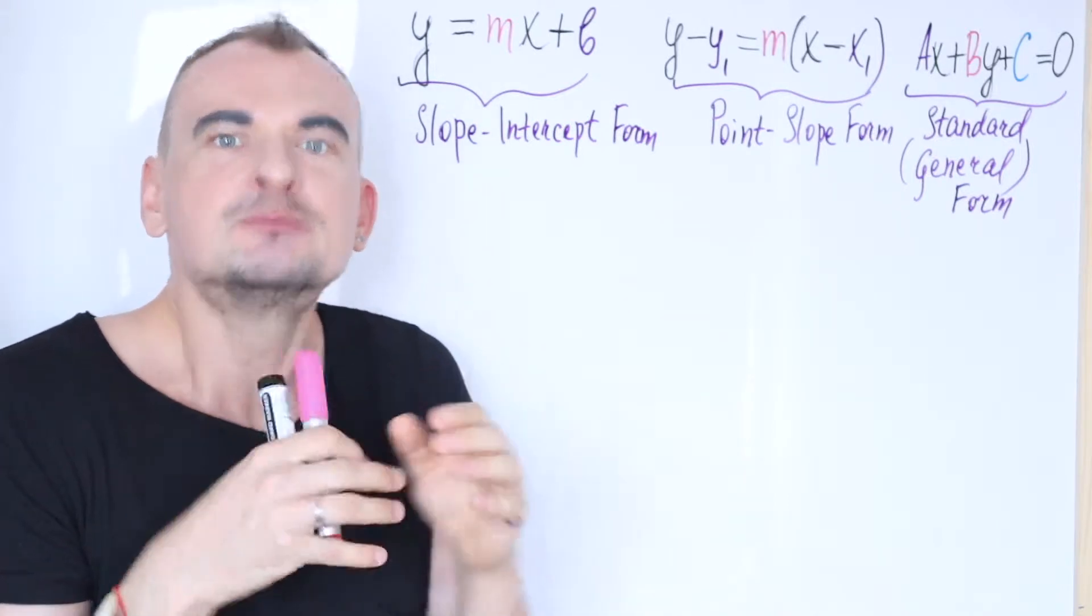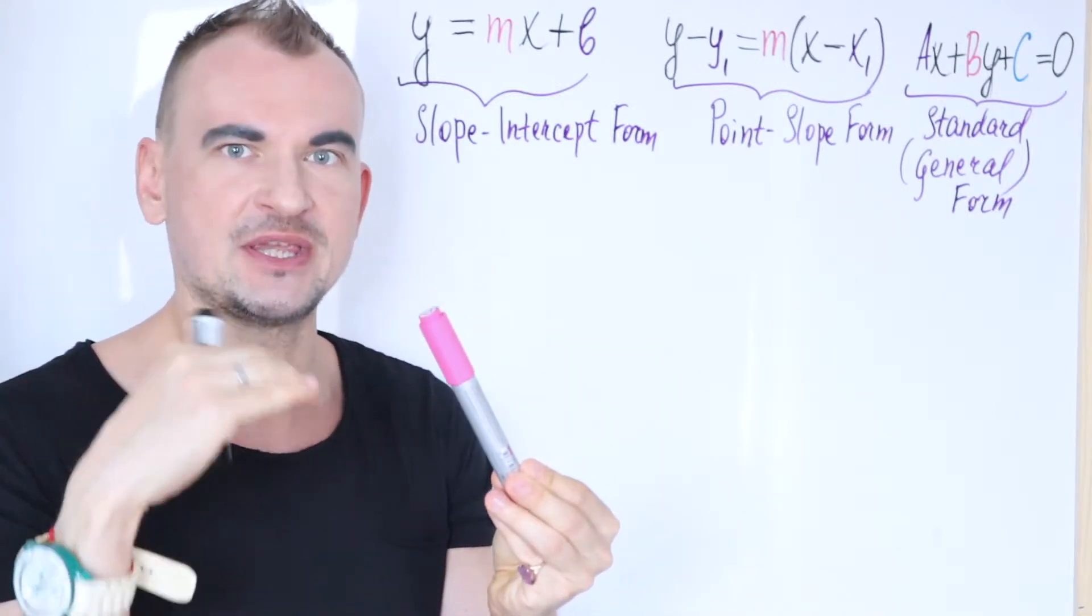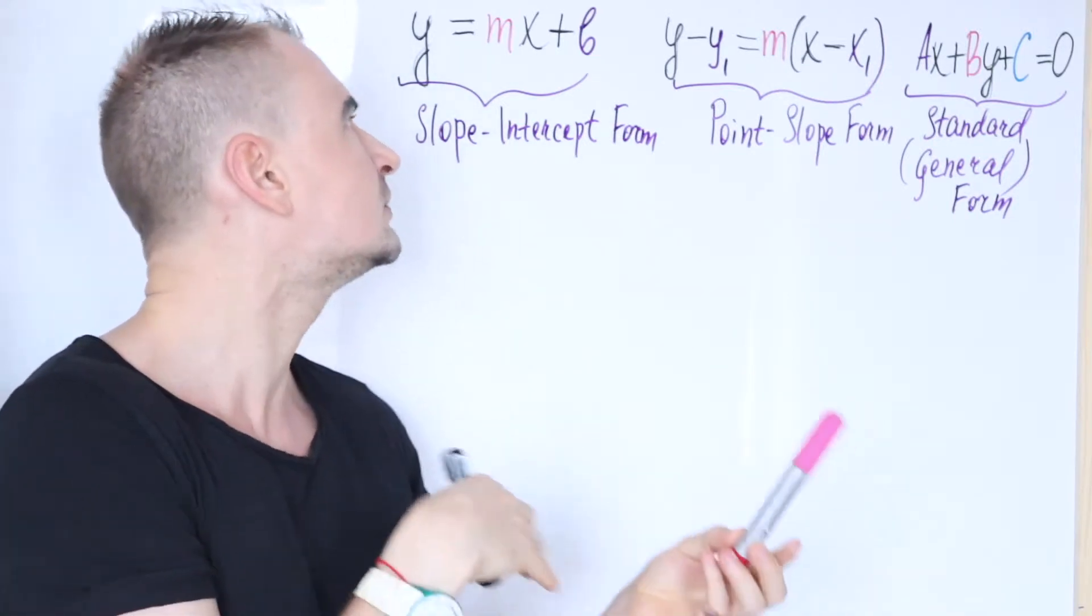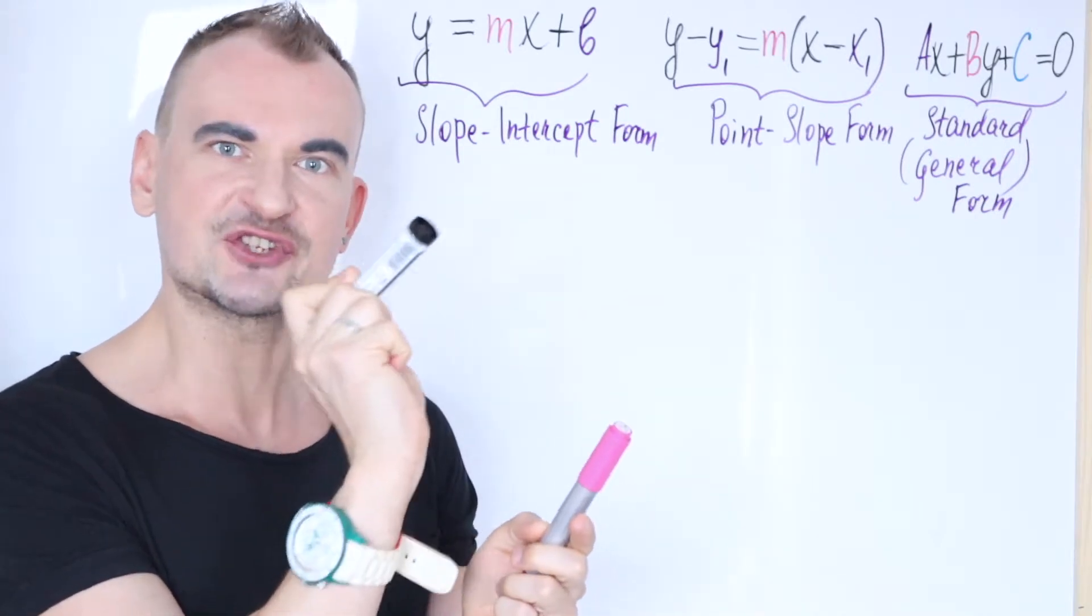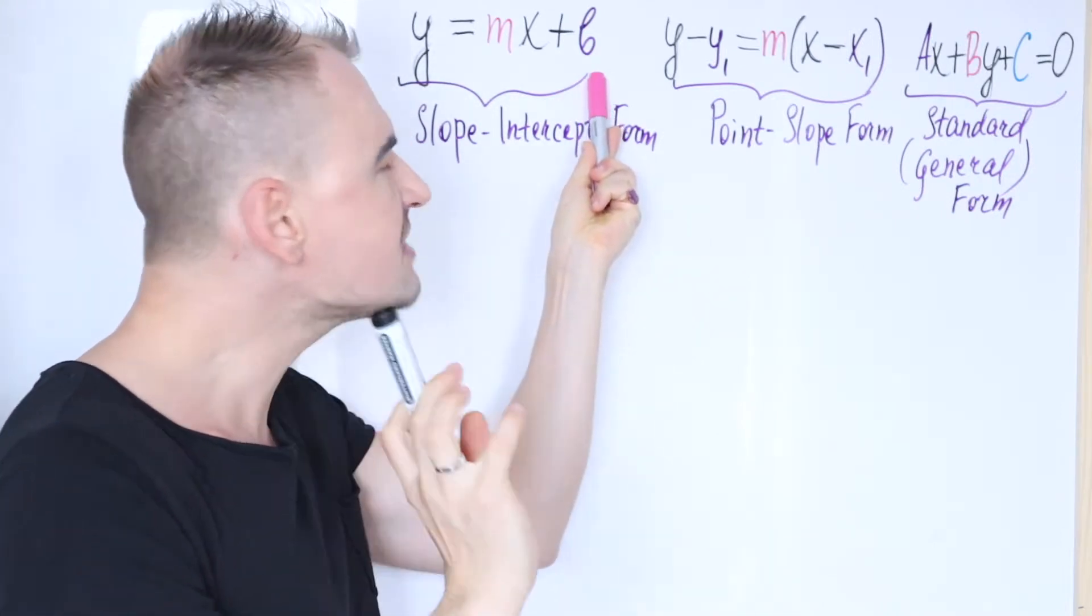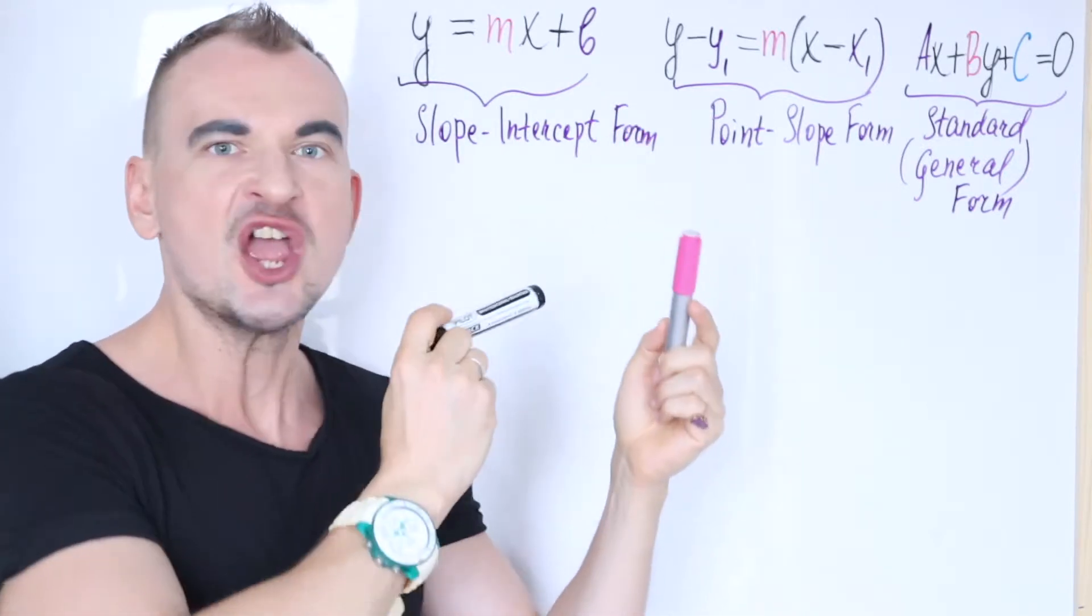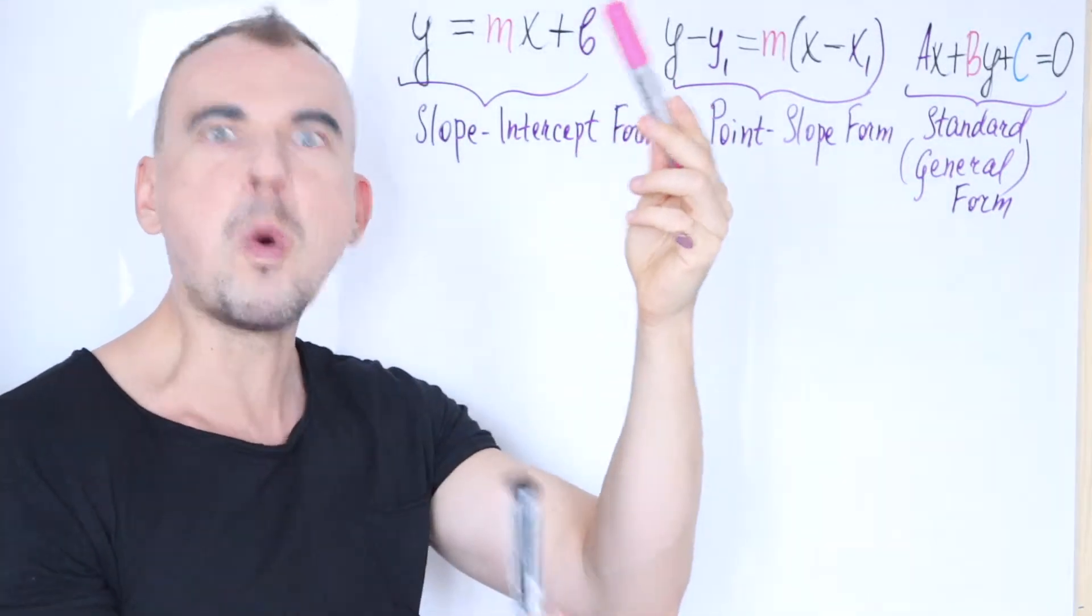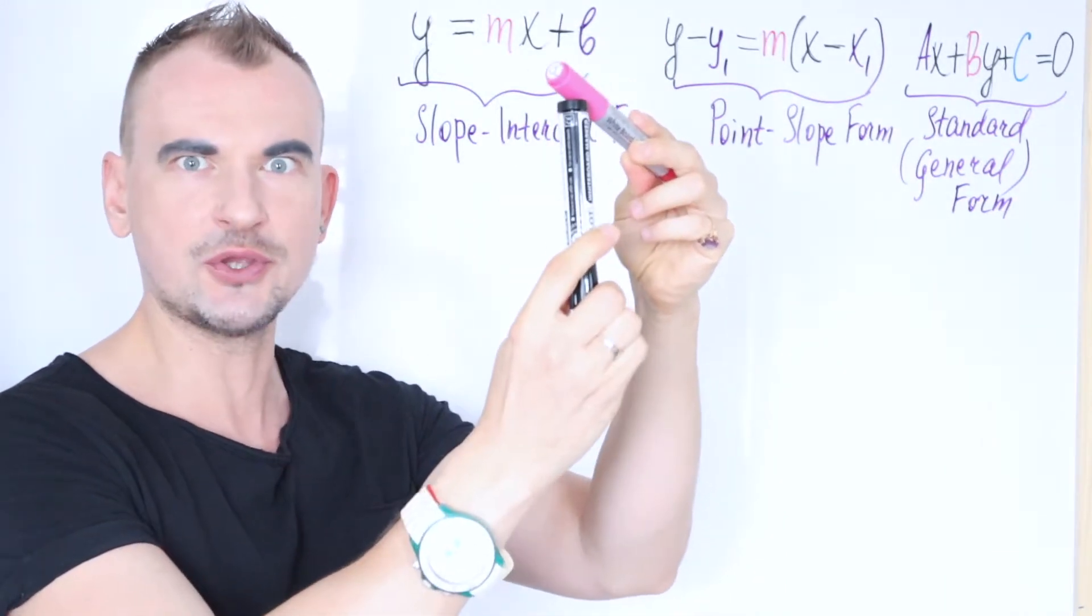So basically, the gradient, to put it in a nutshell, shows you the steepness, how steep is your line. Rise over run, in other words. Or, if it comes to calculating slope, it's just the difference in y's over the x's. And b means the y-intercept. So it's the distance when your graph intersects y-axis, the distance from the zero from the origin to your graph.